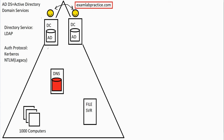All of this together — domain controllers, DNS — provides centralization. We moved away from peer-to-peer networking, where every machine was kind of its own boss with no centralized management, to now working in a centralized environment. These domain controllers and the DNS service help us centralize, so we now have central control over things.